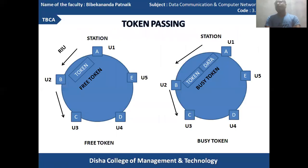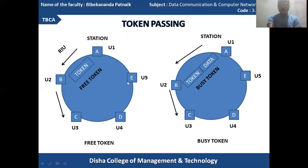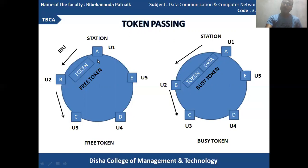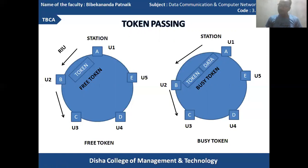This diagram shows the free token and the BG token. In the free token diagram, there are five stations: A, B, C, D, E. The token passes from station A to B, then C, D, E, and returns to A — this is in an anticlockwise mode. Station A creates the token and passes it to station B. The token does not contain any data, which is why this type is called the free token passing system.